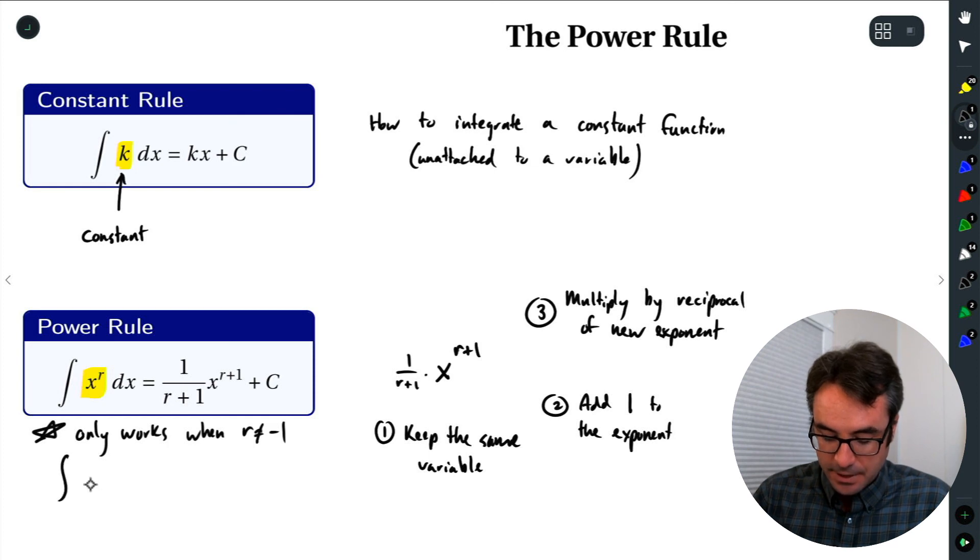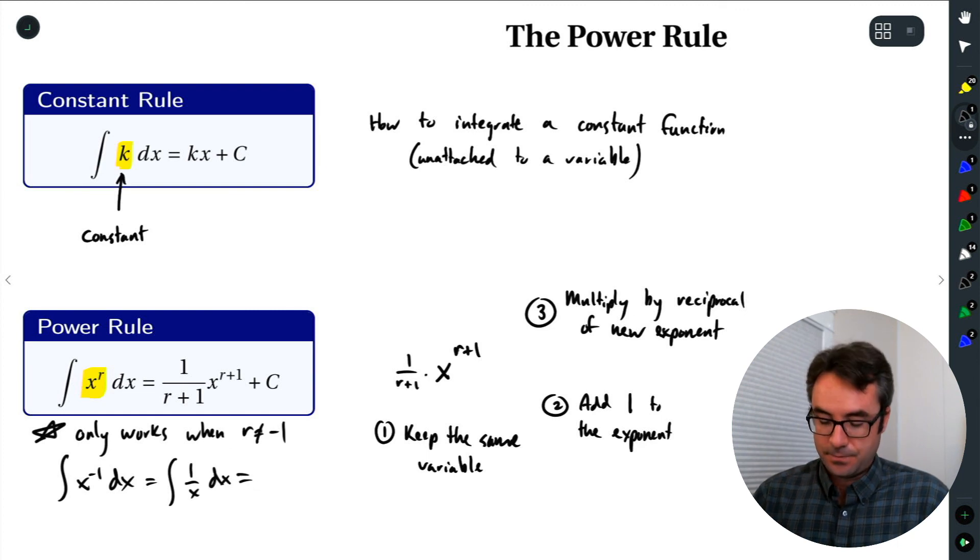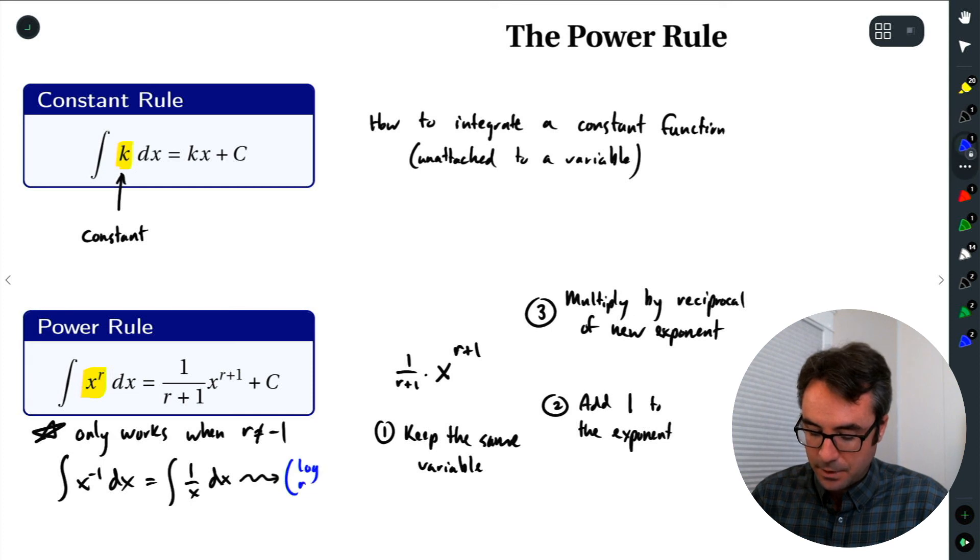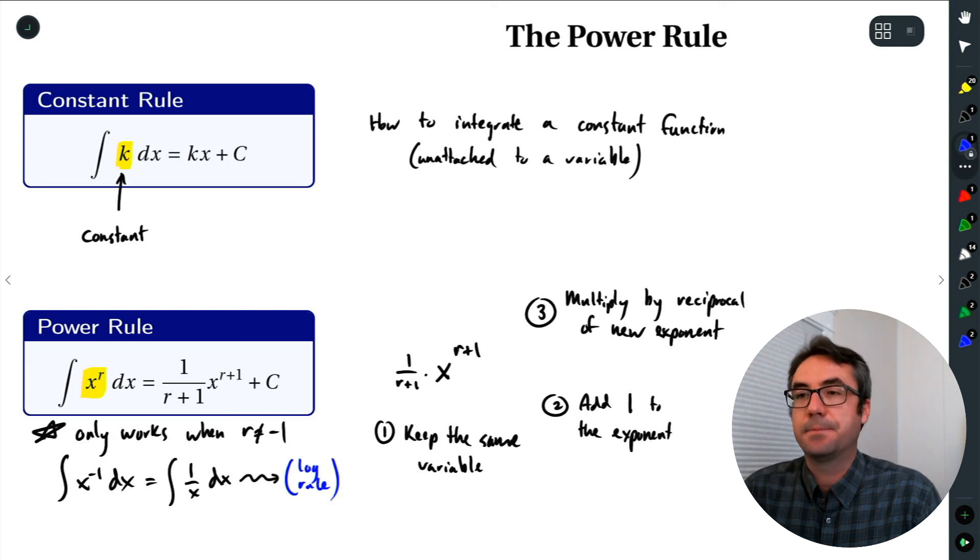And what that looks like, if we were going to integrate x raised to the negative 1, we generally think of this as the integral of 1 over x dx. And we'll get to this. We'll see what this is in a little bit. But this is going to involve kind of a log function in some way. So we'll come back to this. But for right now, if we have a power function, as long as that exponent is not negative 1, we can use this power rule.